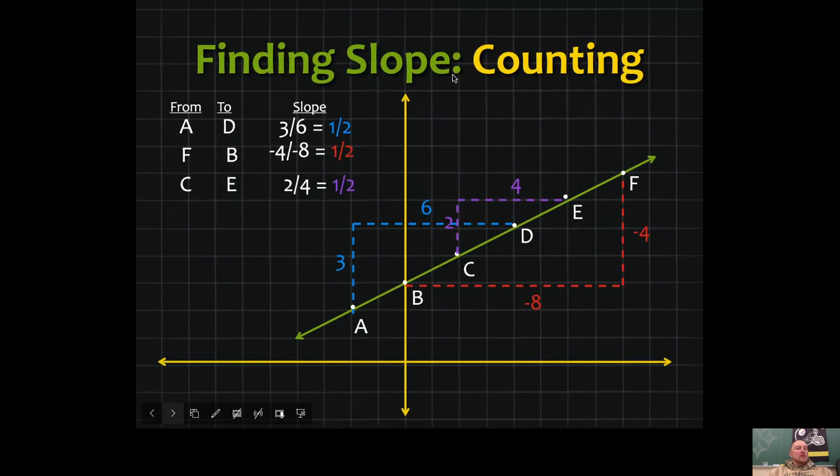One way we're going to find slope is by counting. You can do this from point A to point D because both of these points are on that line. We would count the rise, three units, and then count the run, six units. You write it as a fraction, rise over run: 3/6, that reduces to 1/2.